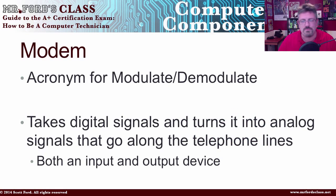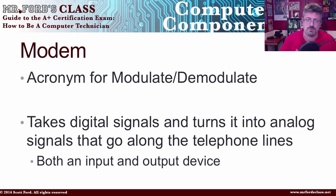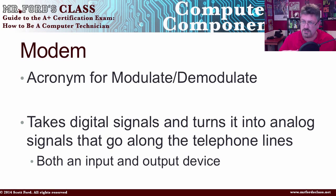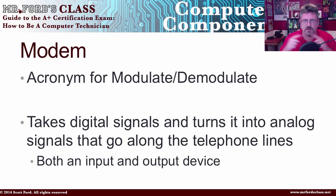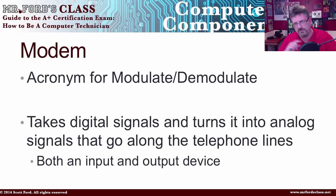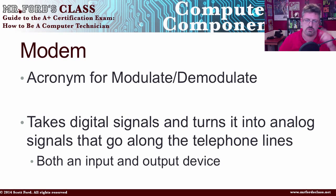The next one is your modem. The modem is actually an acronym for modulate/demodulate. It takes digital signals and turns them into analog signals. This is what we used to use to connect to the internet on a phone line. The phone system used to work analog while your computer works digital. Analog is your waves, and digital is your 0s and 1s, and the two can't communicate with each other. So the modem would take the digital information from the computer, turn it into analog waves to go out on the phone line, and convert incoming analog waves back into digital information.